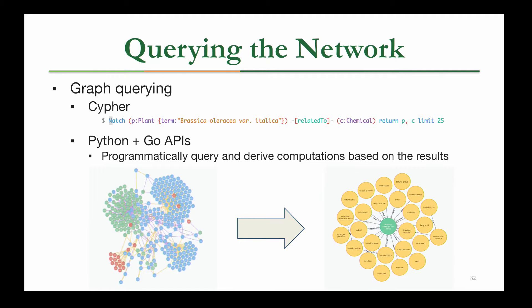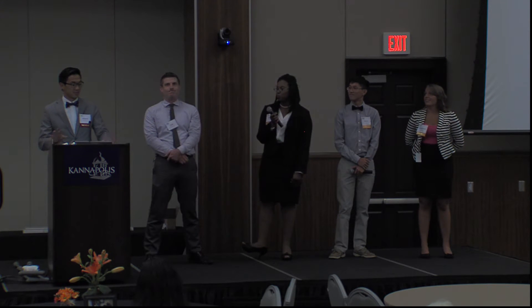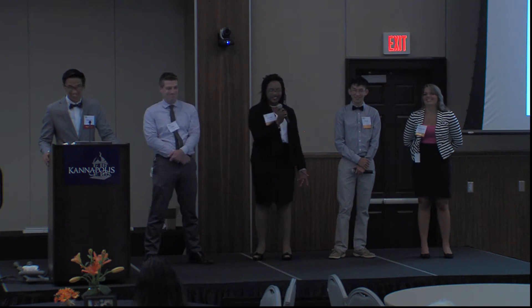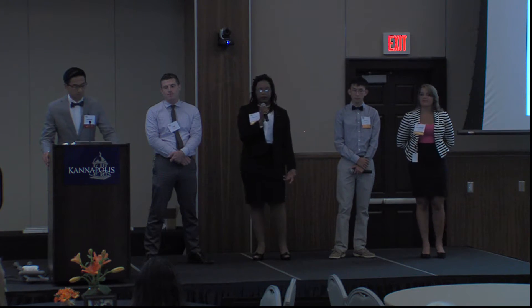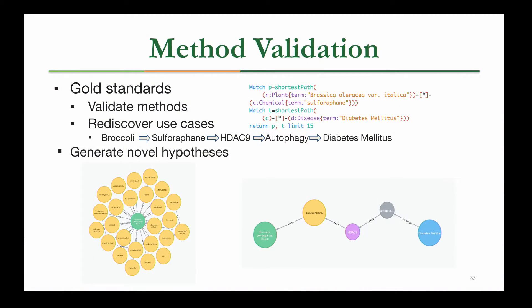When we first uploaded our data into Neo4j, we got an unorganized hairball, as you can see on the left. But using Neo4j's built-in query language Cypher, we were able to extract a more specific result. For example, we created a phytochemical profile for broccoli, asking our knowledge base to extract 25 chemicals associated with broccoli — the image on the right is what Neo4j returned. We're currently querying in Neo4j's web browser but want to begin querying using Python and Go APIs. We validate our methods using the gold standard by manually curating use cases — we already know broccoli is associated with a chemical that decreases diabetes risk, so showing this molecular pathway in our knowledge base validates our approach, enabling biologists to generate new hypotheses.